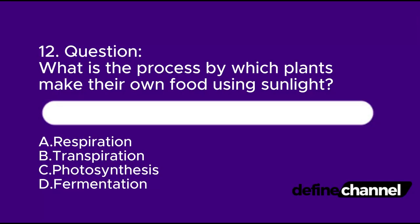Question 12. What is the process by which plants make their own food using sunlight? A. Respiration. B. Transpiration. C. Photosynthesis. D. Fermentation. Which is the correct answer?